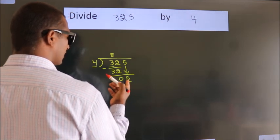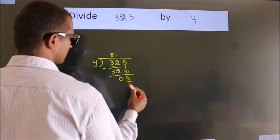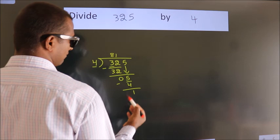A number close to 5 in the 4 table is 4 times 1 equals 4. Now we subtract. We get 1.